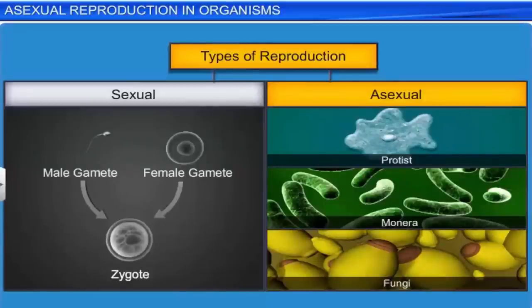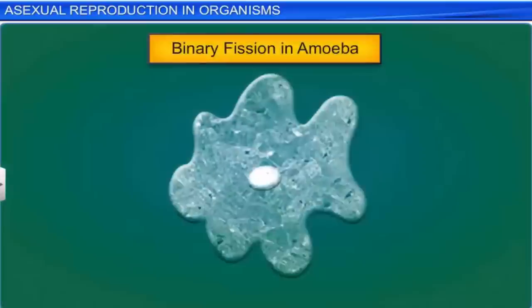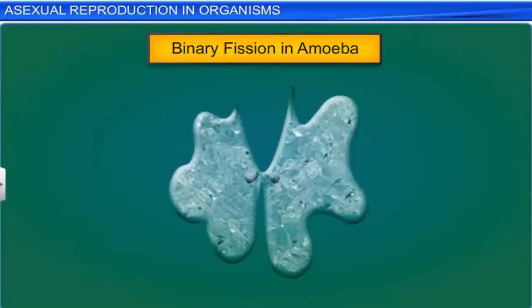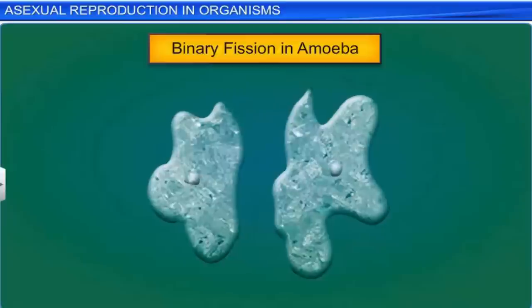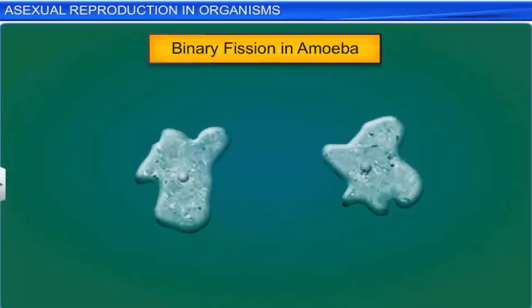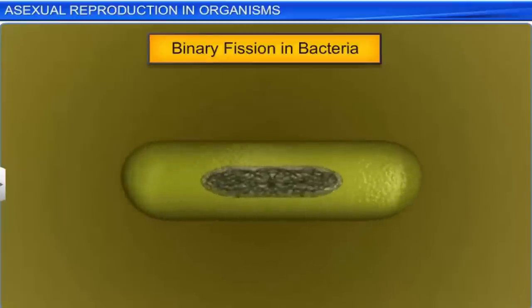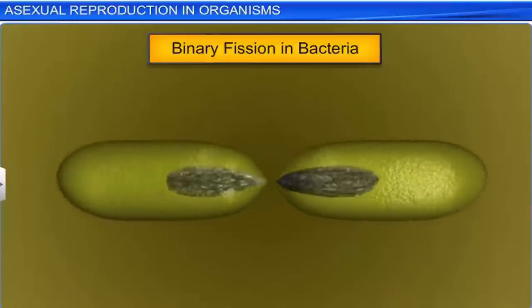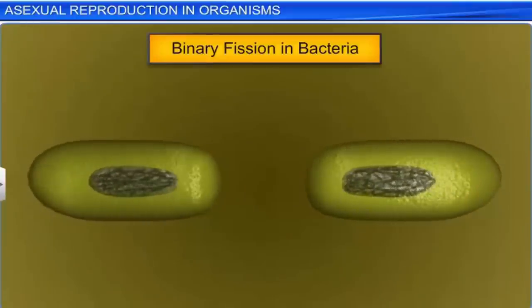Asexual reproduction, commonly seen in protists, monera, and fungi, is of many different types. The amoeba, for instance, reproduces by binary fission, where the parent cell divides into two halves, and each half develops into a daughter cell. Likewise, bacteria too reproduce through binary fission.